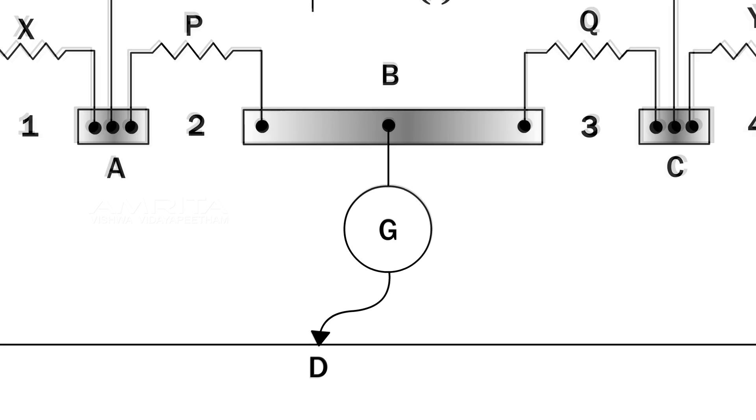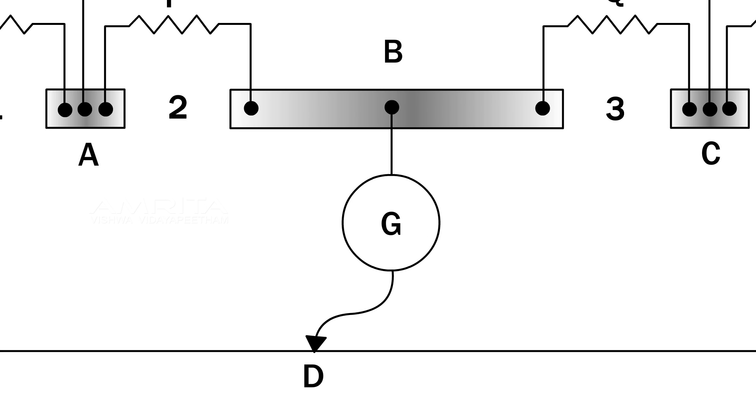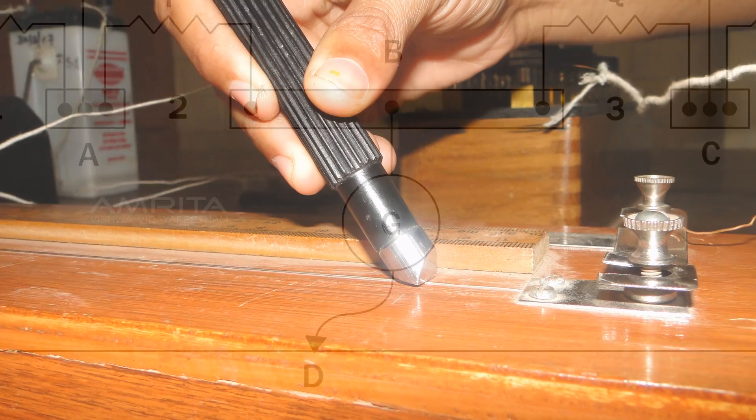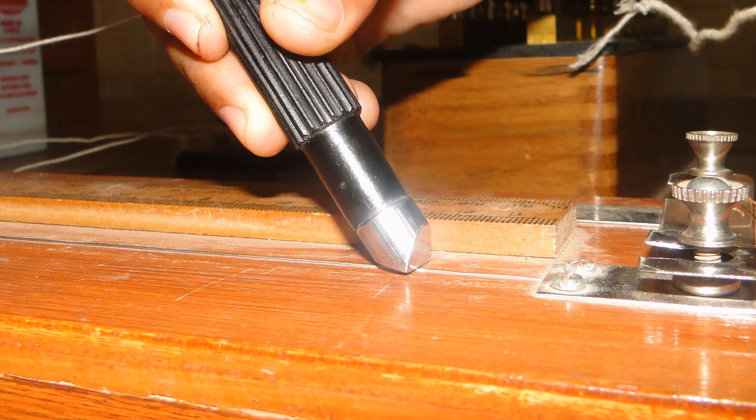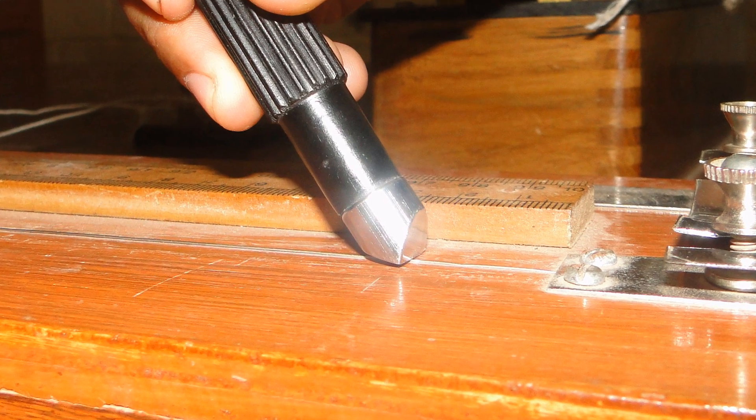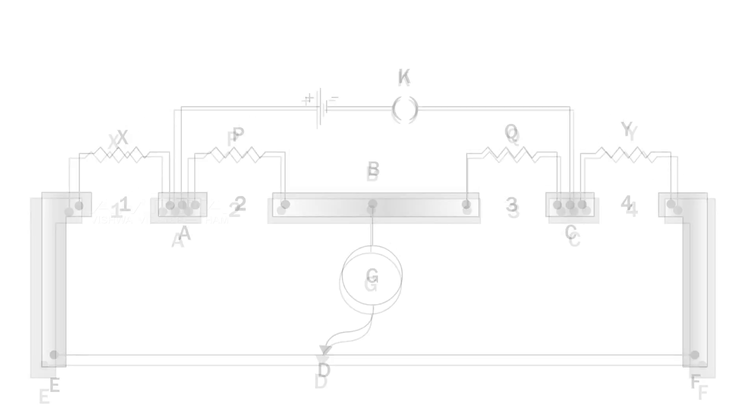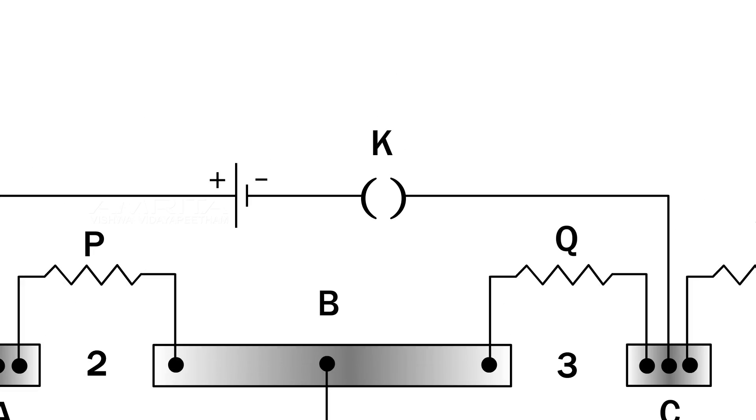A galvanometer G is connected between terminal B and the jockey D, which is a knife edge contact that can move along the meter wire EF and press to make electrical contact with the wire. A lead accumulator with a key K in series is connected between terminals A and C.